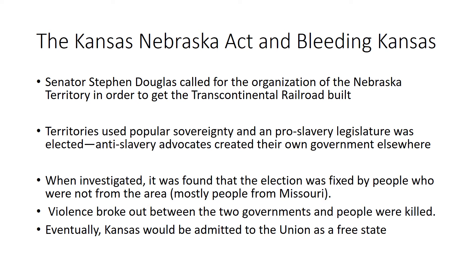At this time, Kansas and Nebraska were getting ready to become states, and Senator Stephen Douglas called for the organization of the Nebraska Territory into Kansas and Nebraska in order to get the transcontinental railroad built — stretching from Missouri all the way to the west coast of California. Because of the Compromise of 1850, these territories would use popular sovereignty to vote on whether they would be free or slave. In Kansas, a pro-slavery legislature was elected.